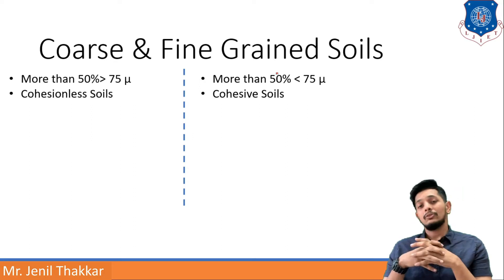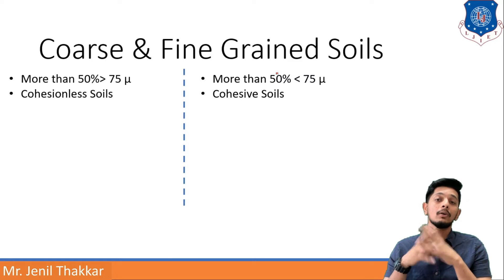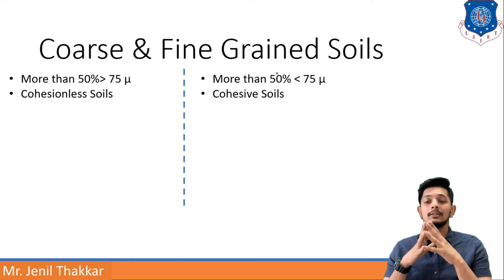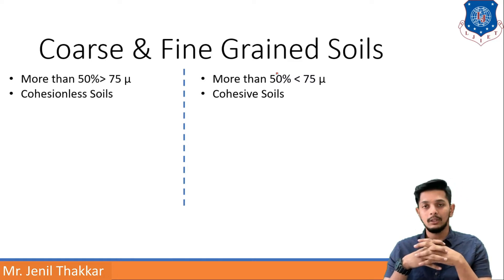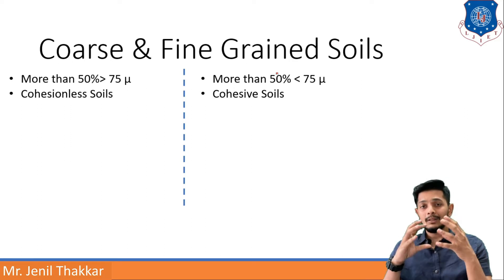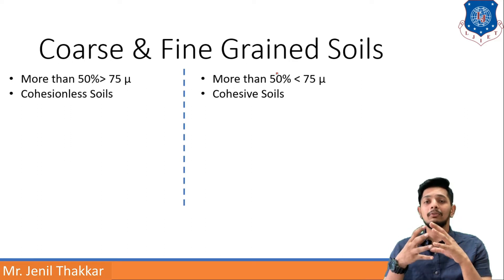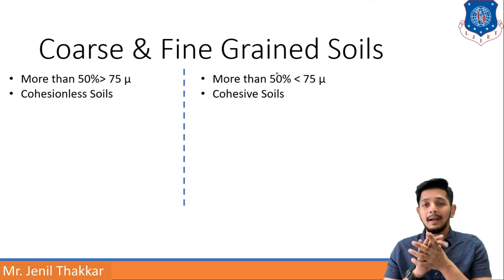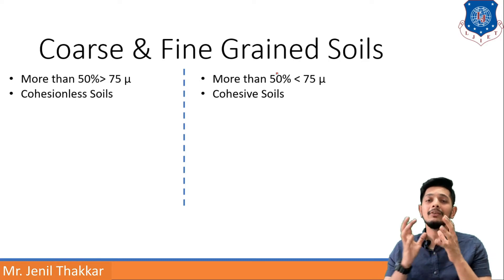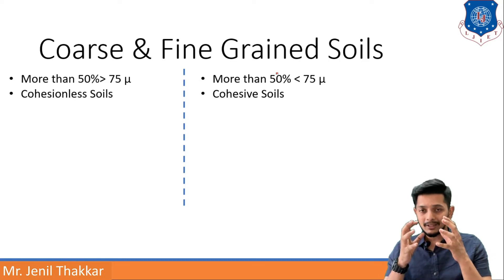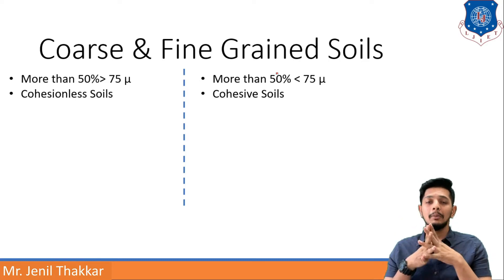If the soil is cohesion-less, then it will be a coarse grained soil. If it is a cohesive soil, then it is a fine grained soil. Cohesion means the attraction between the particles which are of the same material. So if the soil is having some cohesion, it will be a fine grained soil.